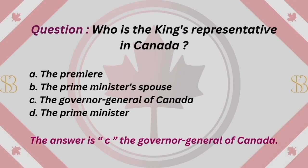Question: Who is the King's representative in Canada? A. The Premier. B. The Prime Minister's spouse. C. The Governor-General of Canada. D. The Prime Minister. The answer is C. The Governor-General of Canada.